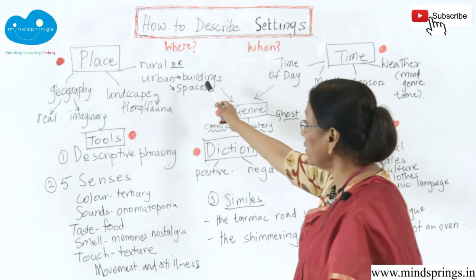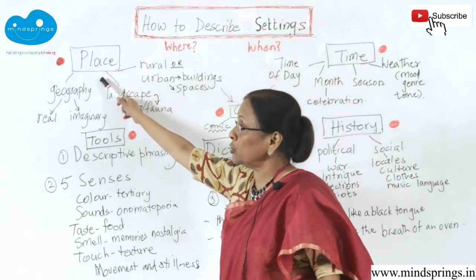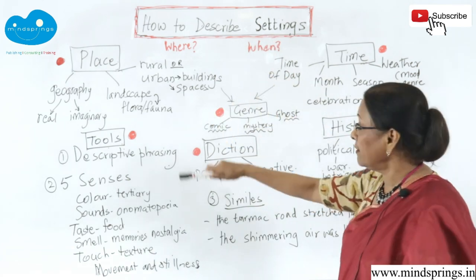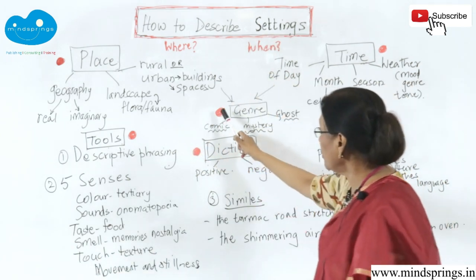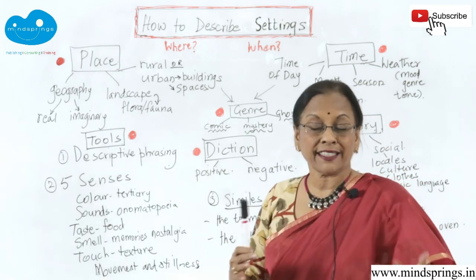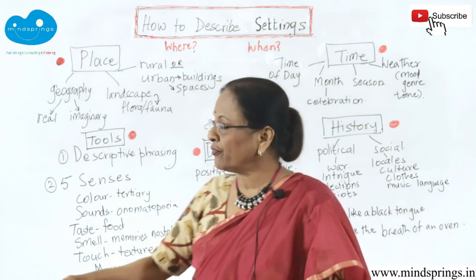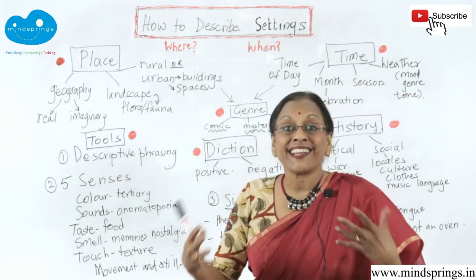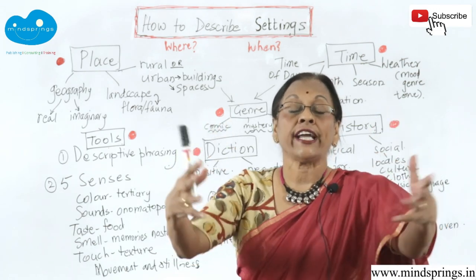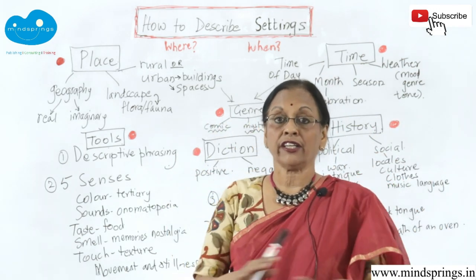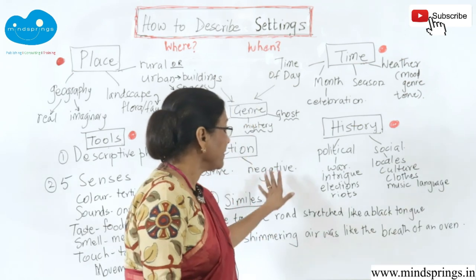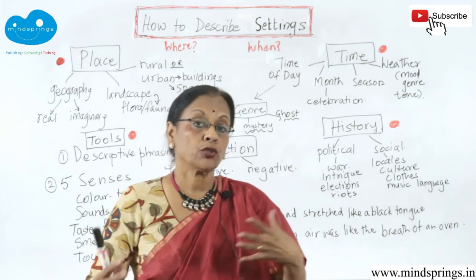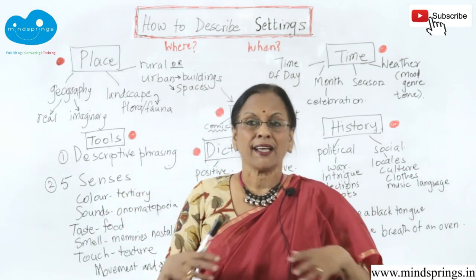Settings covers place — which is where — time — which is when — and then you have the genre. What the setting does is it actually affects your genre. So if you are going to write a comic story, a mystery story, or a ghost story, your setting needs to make it happen right at the beginning. You cannot give your reader any shocks. Then with time you have history, and the political and social conditions of a place.